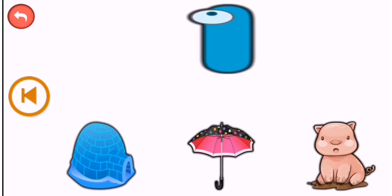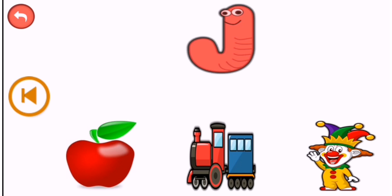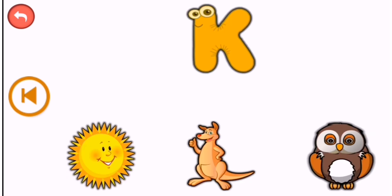Guess below the picture. I — igloo. J — joker. K — kangaroo.